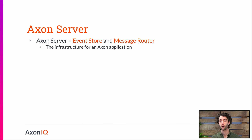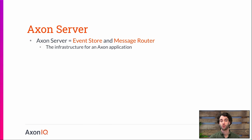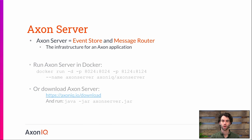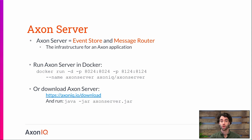With that in place, we can move on to Axon Server, which we will be using throughout this course. Axon Server is a dedicated event store and message routing solution, essentially giving us all the infrastructure we will need to go for eventually a distributed solution as well, but also in a single JVM. This would simplify our lives a lot. There are several ways we could get Axon Server — one of which is through Docker, so you could just do a regular Docker command to run it, or you would download it yourself and run it like a JAR, which is what it is.